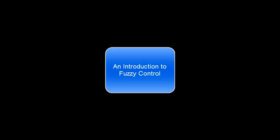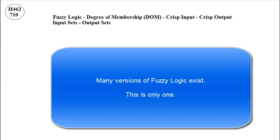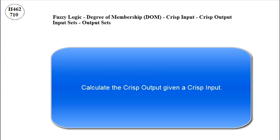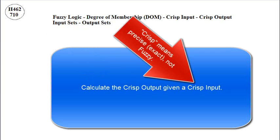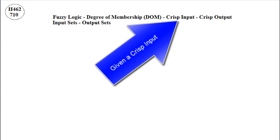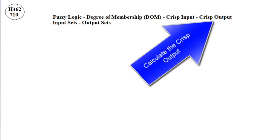An introduction to fuzzy control. Many versions of fuzzy logic exist — this is only one. The goal is to calculate the crisp output given a crisp input. Crisp is fuzzy logic terminology; it means precise or exact, not fuzzy. Given a crisp input, calculate the crisp output.